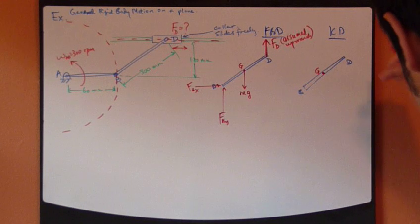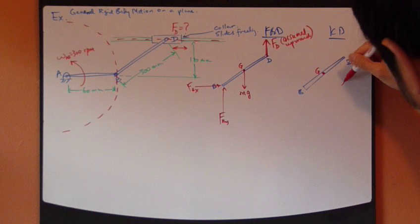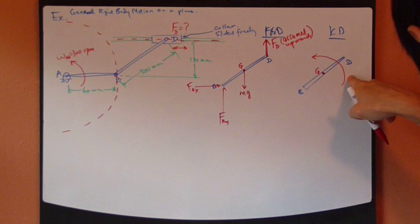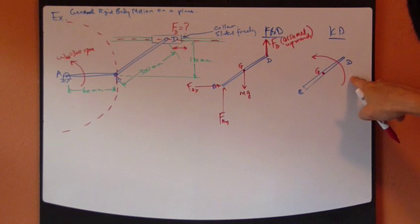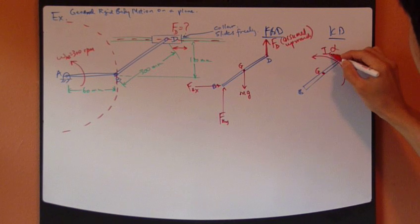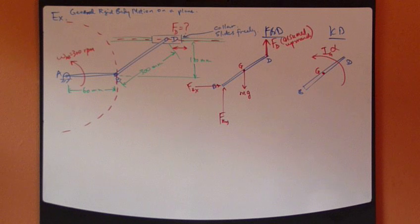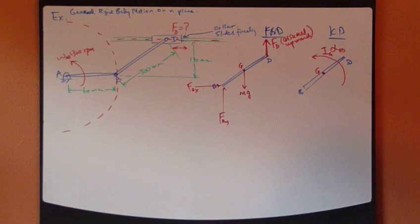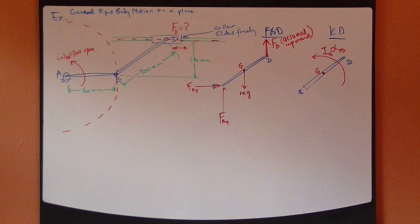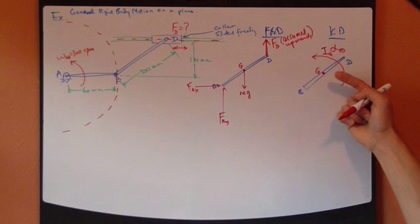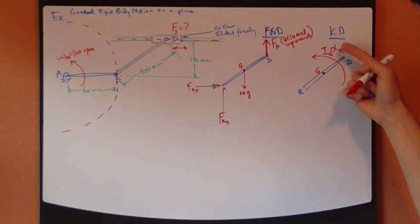So for the rotational part I have I-alpha term. Now I'm going to assume that this I-alpha goes clockwise. About G-alpha, alpha of BD. And again this direction also is arbitrary. I'm going to assume the direction.